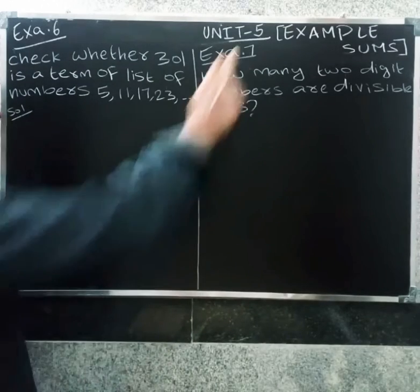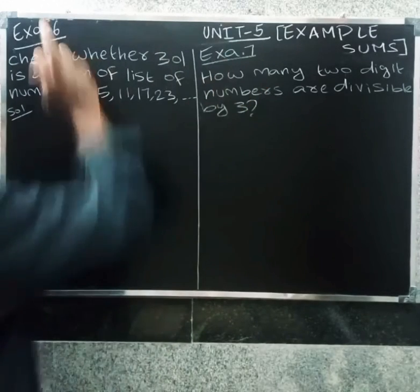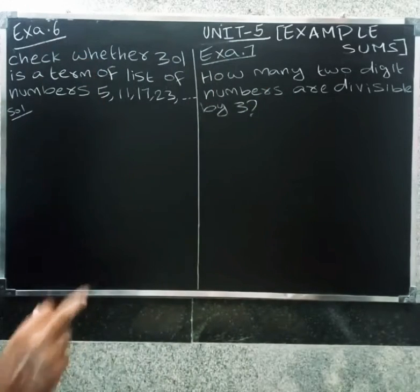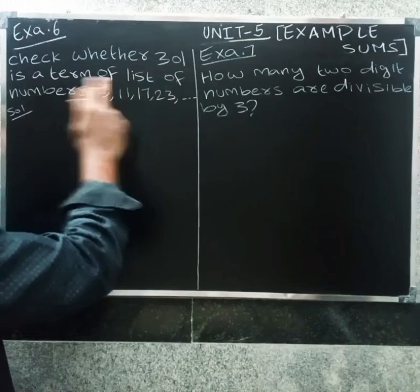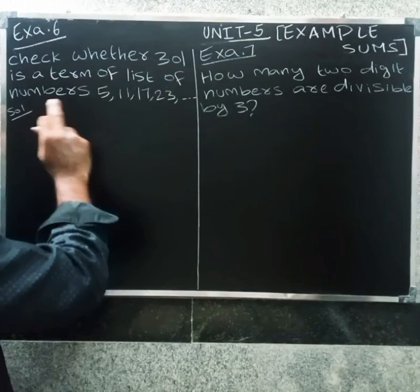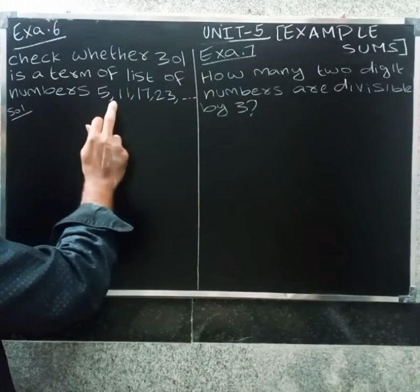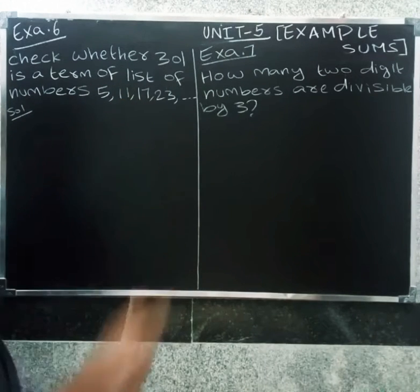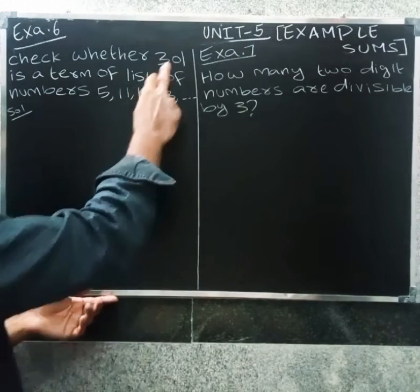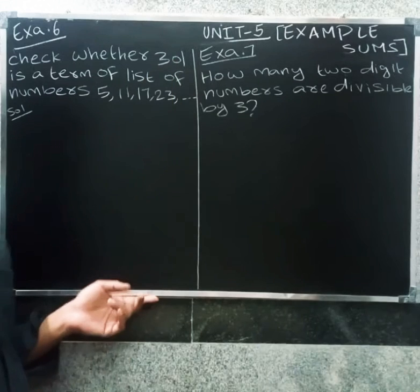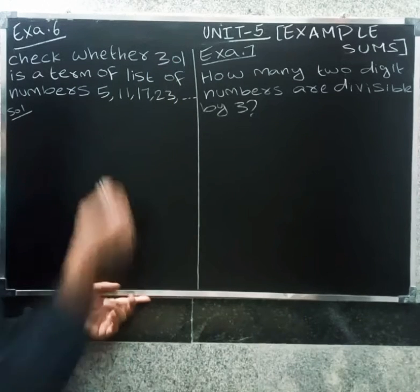Welcome friends. We will be checking if 301 is a term of the AP: 5, 11, 17... So we need to determine if 301 is also a term, i.e., find n such that aₙ = 301.